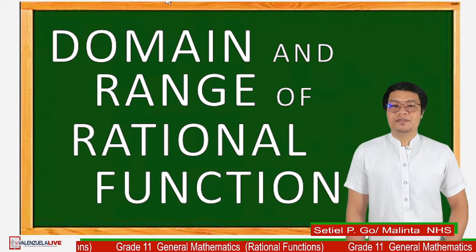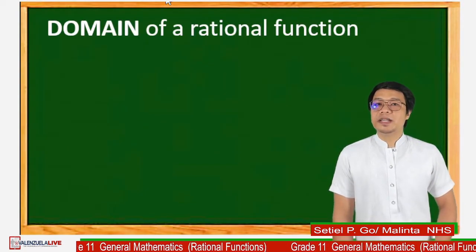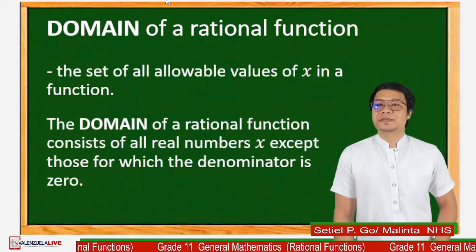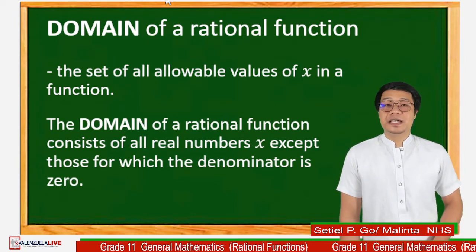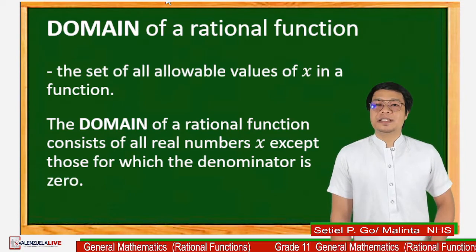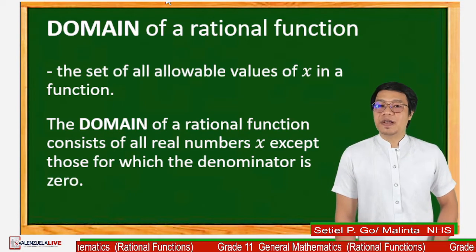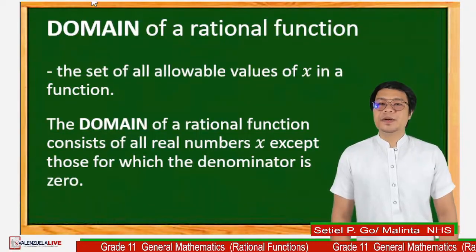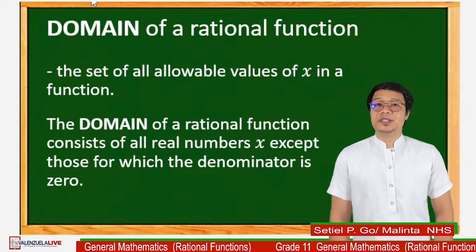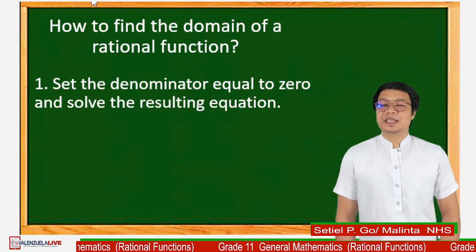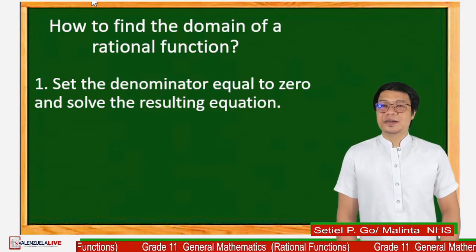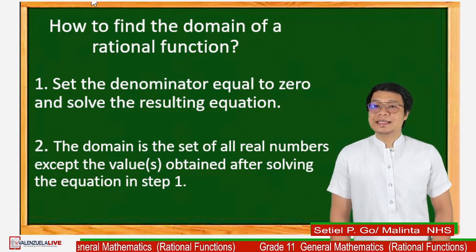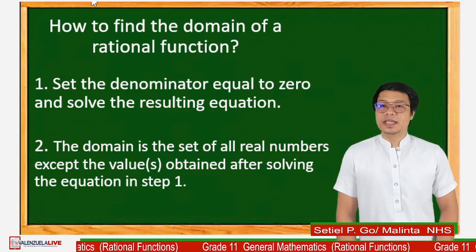Let's have the domain and range of a rational function. The domain is the set of all allowable values of x in a function. The domain of a rational function consists of all real numbers x except those for which the denominator is 0. To find the domain: step 1, set the denominator equal to 0 and solve the resulting equation. Step 2, the domain is the set of all real numbers except the values obtained in step 1.